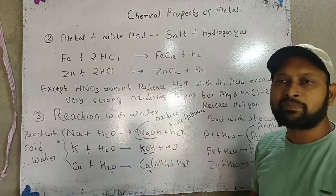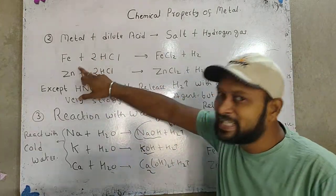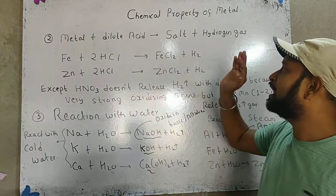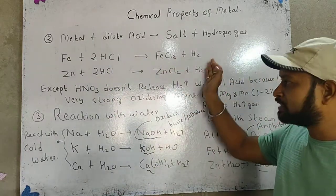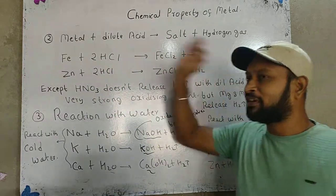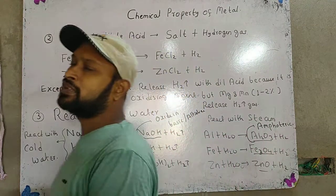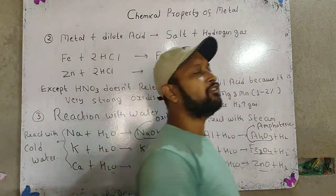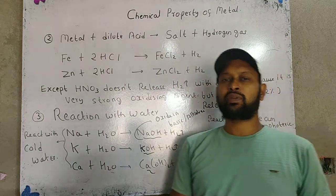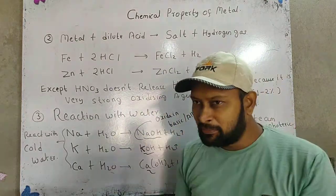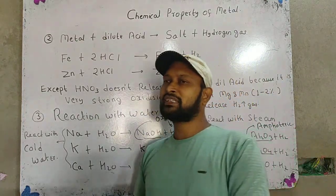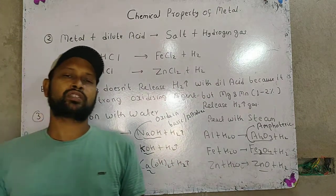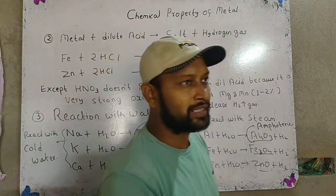For example, when iron reacts with hydrochloric acid, it forms iron chloride plus hydrogen gas. And once again, when zinc reacts with dilute hydrogen chloride, it forms zinc chloride salt plus hydrogen gas. We have to remember: when the metal reacts with the acid, it forms the salt and it releases the hydrogen gas.